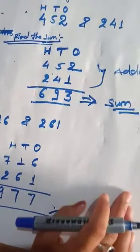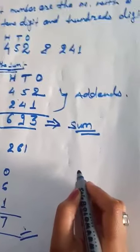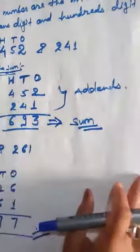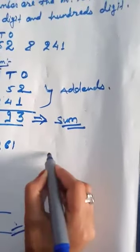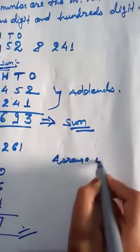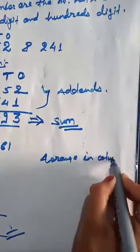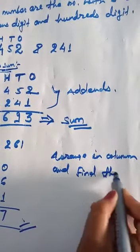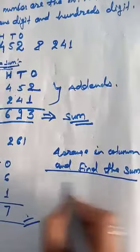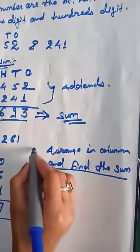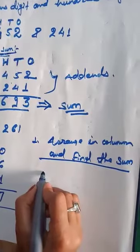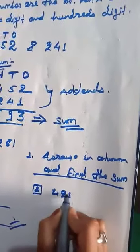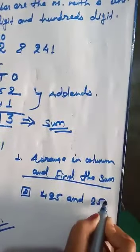Very simple. I will give you some questions. Arrange in column and find the sum. Question a: 425 and 251. Question b: 704 and 232.